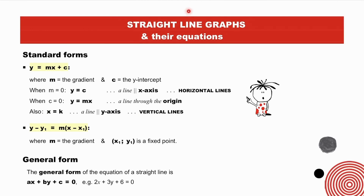Straight line graphs and their equations. Standard forms: y equals mx plus c, where m is the gradient and c the y-intercept; or y minus y₁ equals m(x minus x₁), where we need m and a point. In y equals mx plus c, if we substitute gradient m equal to 0, the equation becomes y equals c — the standard form of lines parallel to the x-axis, i.e., all horizontal lines. When the y-intercept c equals 0, the equation becomes y equals mx — the standard form of all lines through the origin. Also, the equation x equals k, a constant, is the standard form of all lines parallel to the y-axis, and so of all vertical lines.